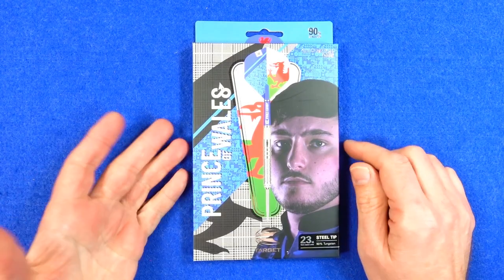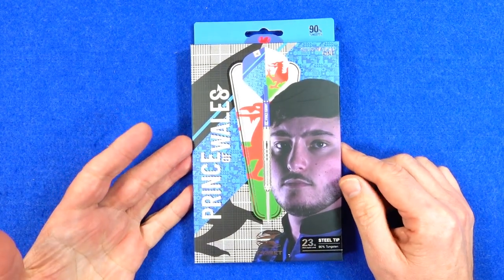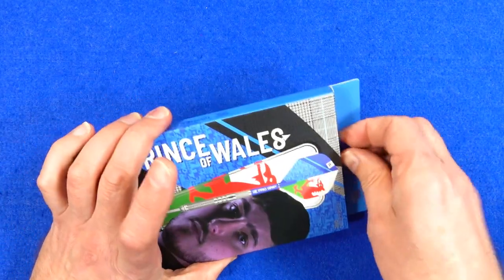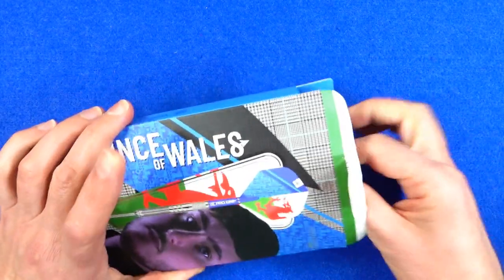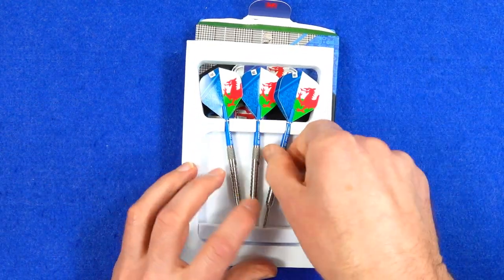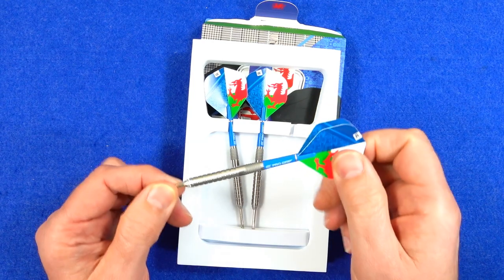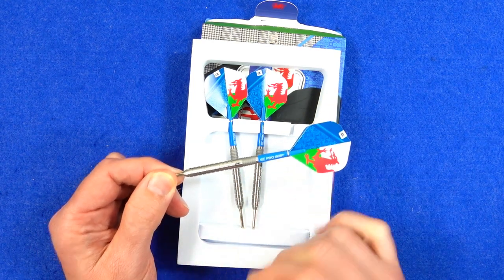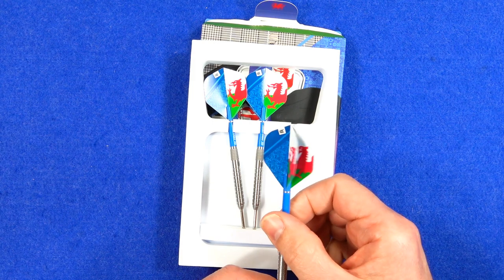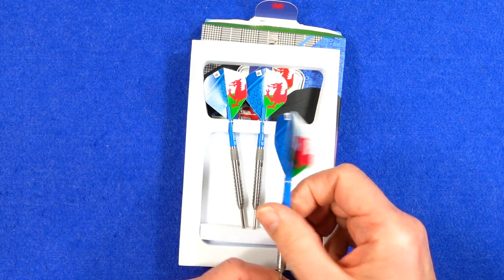As usual they come in the Target cardboard packaging, got quite a nice graphic design on them. Pull that tab, inside you've got a forming set and the darts come fitted with blue short ProGrip stems and the Louie Williams standard flights, another nice design with the Welsh Dragon.